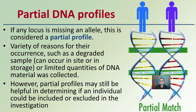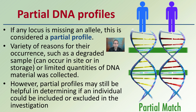Starting with partial DNA profiles — rarely do you get a complete 100% match. Partial profiles are defined as any locus missing an allele. There are a variety of reasons for their occurrence, such as a degraded sample, which can occur either on site or in storage over time, or simply limited quantities of DNA material were collected. However, partial profiles may still be helpful in determining if an individual could be included or excluded in the investigation. Just because you have a partial profile doesn't mean all is null and void — they can still be utilized in the collection of evidence.